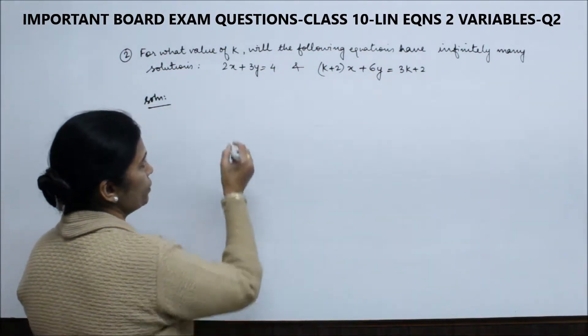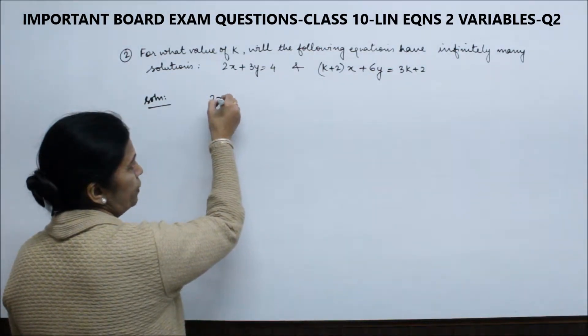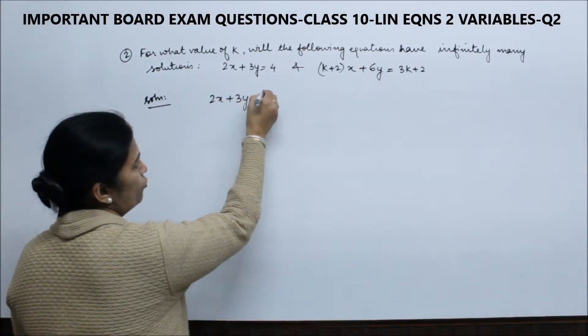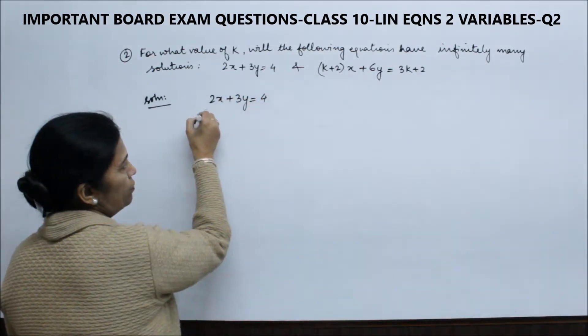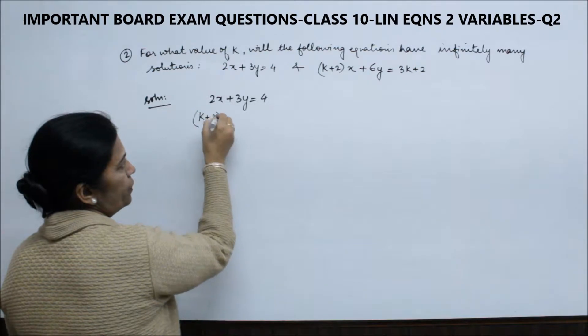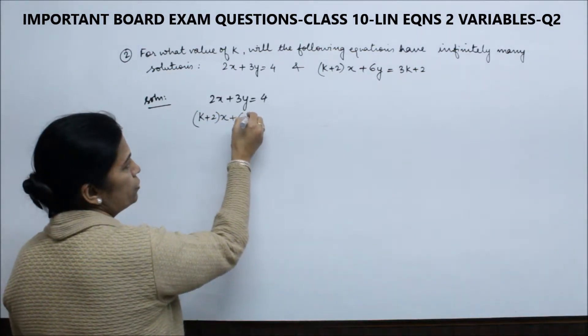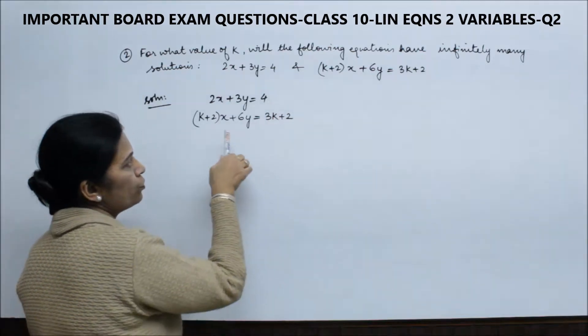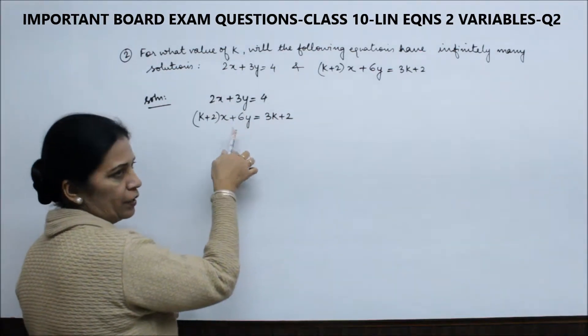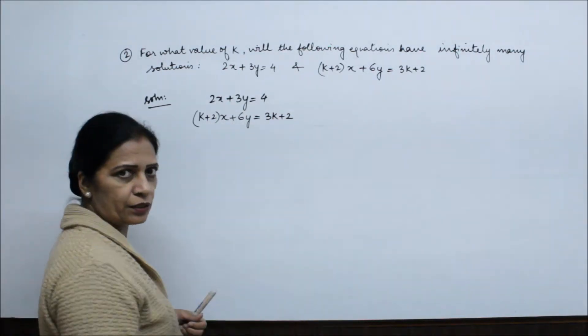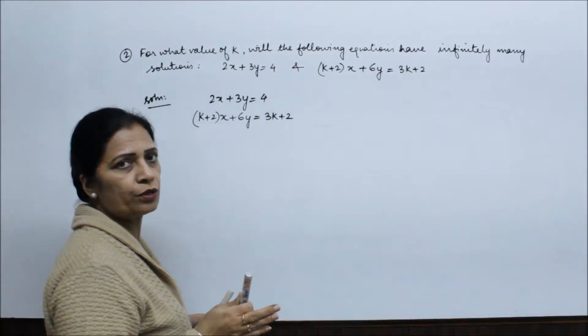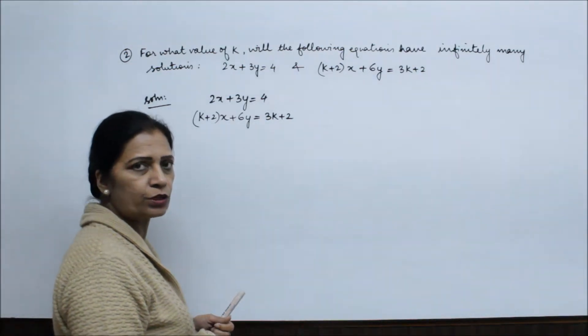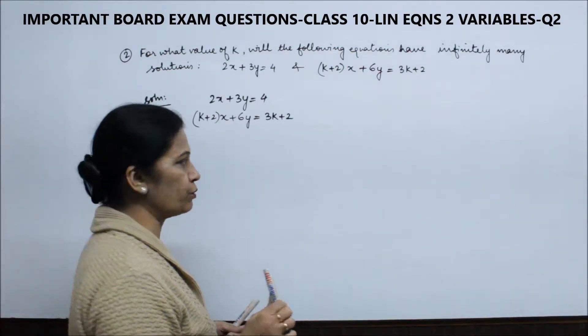The first equation is written correctly: 2x + 3y = 4. The second equation is (k+2)x + 6y = 3k + 2. So x, y terms are on the left side, constants on the right side. Remember, constants should be on the same side of the equals sign for both equations.